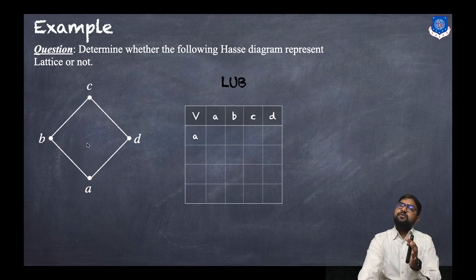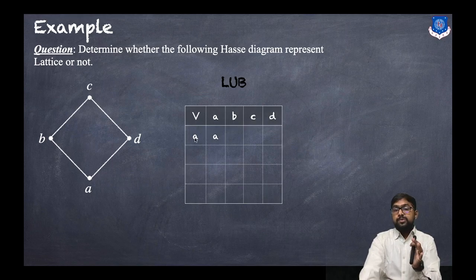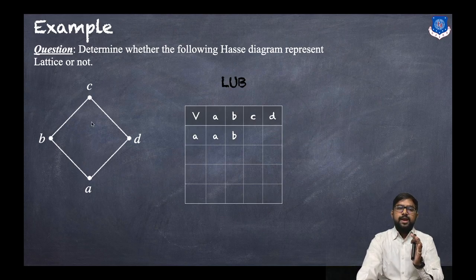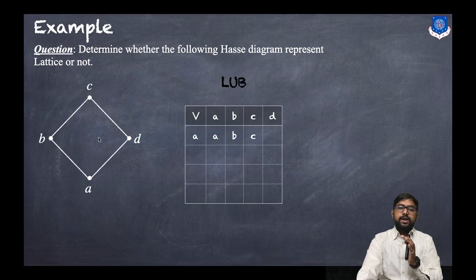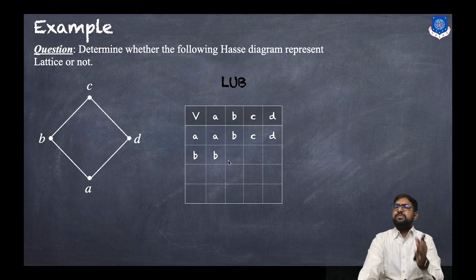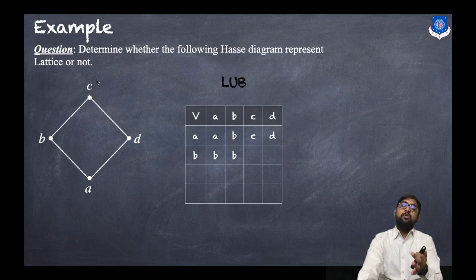LUB of a and a is a itself. LUB of a and b is b. LUB of a and c is c. LUB of a and d is d. Then b and a is b, b and b is b, b and c is c, and b and d is c.